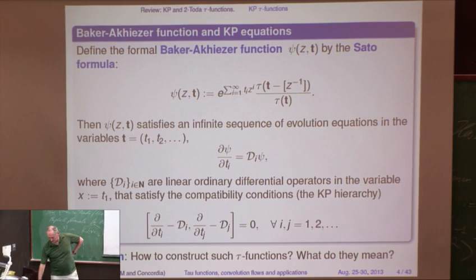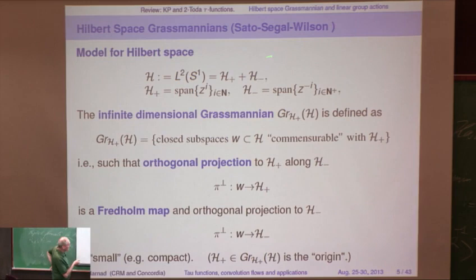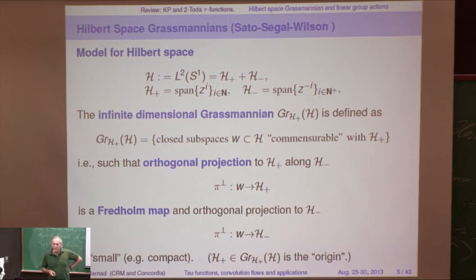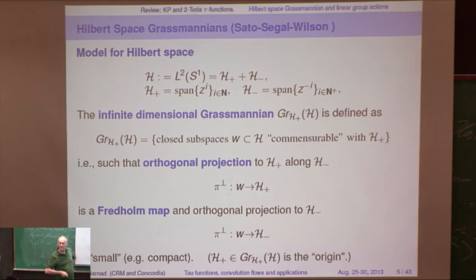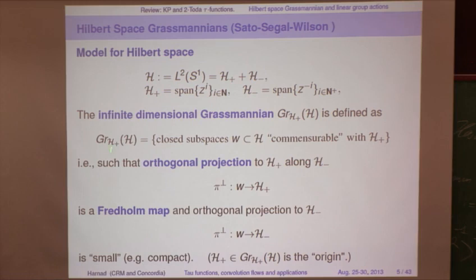Here's a model. You take a model for Hilbert space — I like this model. Take any countable, separable Hilbert space with an orthonormal basis e_i. I'm taking L^2(S^1) with the monomials as the basis. So H-plus is the positive monomials, H-minus is the negative. For those who like analysis, H-plus is essentially the H^2 Hardy space, so you can think of this as Fourier series which extend holomorphically to the inside or outside of the unit circle.